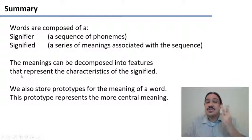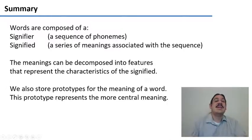In summary, words have two main parts: the signifier, which is the sequence of phonemes, and the signified, which is the meanings associated with the sequence of phonemes. These two are connected in an arbitrary way.